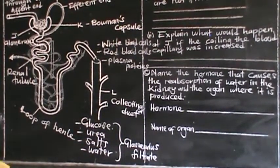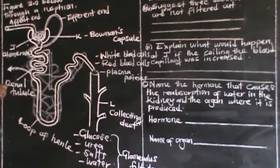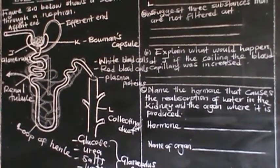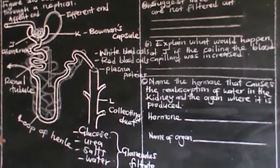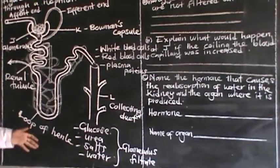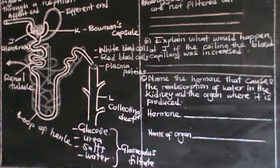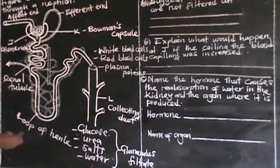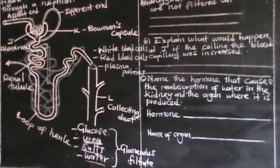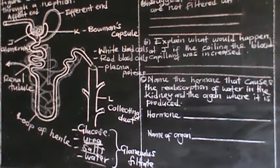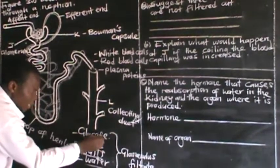The essence of the entire process of urine formation is to eliminate substances which are not needed in the blood, such as urea. Some salts and water are also eliminated. The most important substances, like glucose, are needed in the blood, so glucose should not be found in urine.